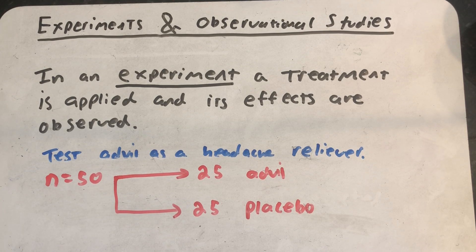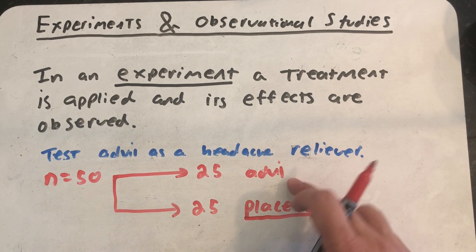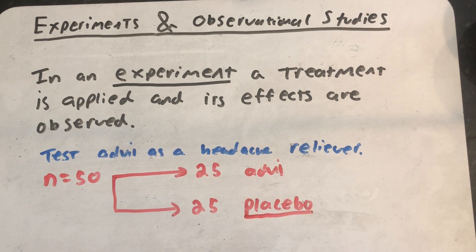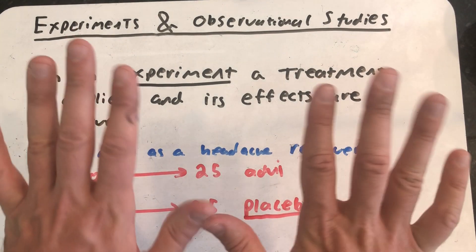The placebo is a fake treatment. It's a harmless and ineffective pill or medicine. So 25 get the actual treatment, 25 get a fake treatment known as a placebo. We check in each group. And what this is going to do is give me data about what Advil does and what would happen if people didn't get Advil. And then I can compare them.